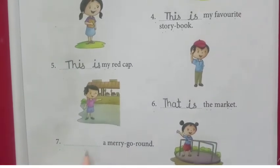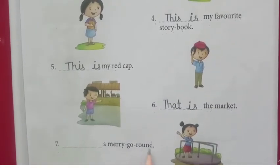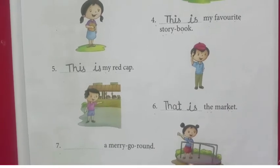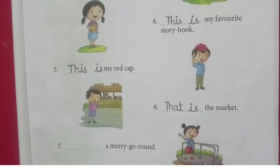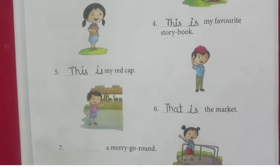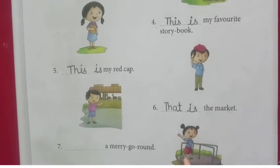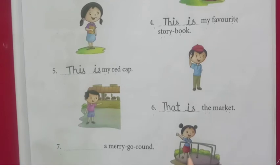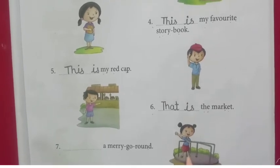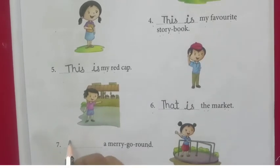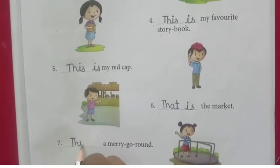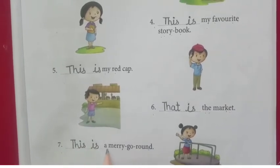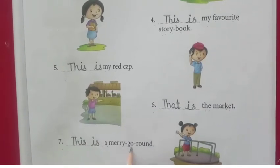Number 7 — a merry-go-round. See students, this is a merry-go-round. Wo kaha par hota hai? Gardens mein. So, it is nearby. Girl is nearby or far away? She is nearby. So, what we have to write? 'This.' This is a merry-go-round.